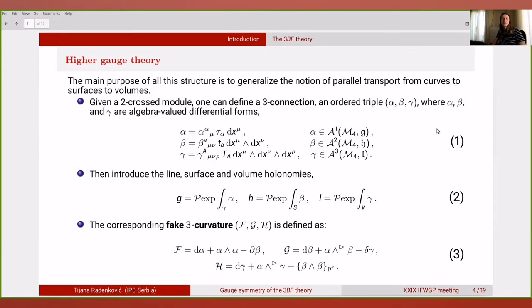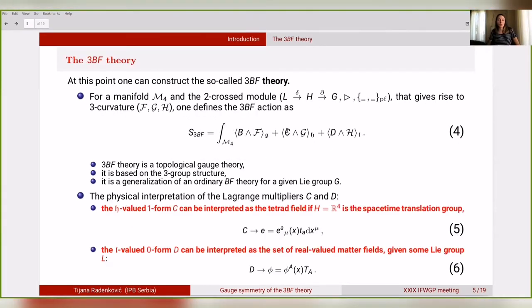Having in hand the 3-group structure, we can proceed to define the higher DH theory. The main purpose of this structure is to generalize the notion of parallel transport from curves to surfaces and volumes. Given a 2-crossed module, one can define the trig connection as an ordered triple alpha, beta, gamma of Lie algebra valued differential forms. We see that alpha is G-valued 1-form, beta is H-valued 2-form, and gamma is L-valued 3-form. Then we can introduce the line, surface, and volume holonomies, as well as corresponding fake 3-curvature as given by equation 3. At this point, we can construct the so-called 3BF theory.